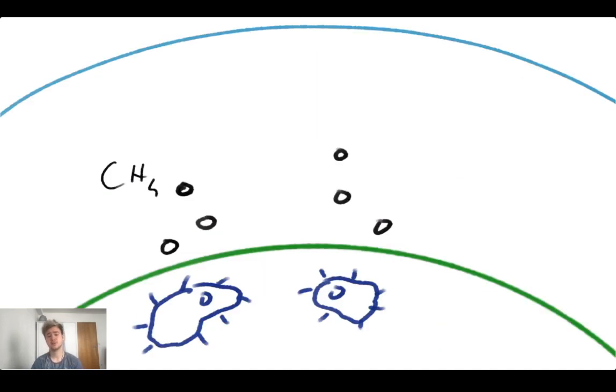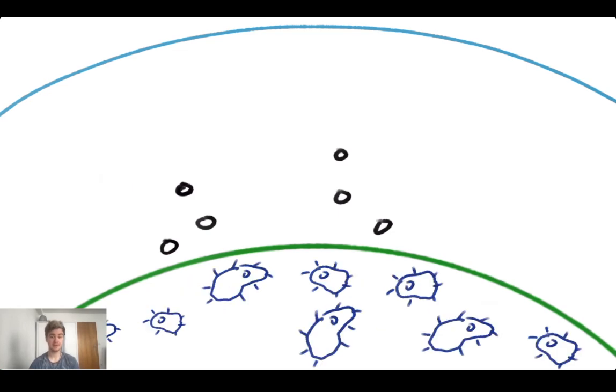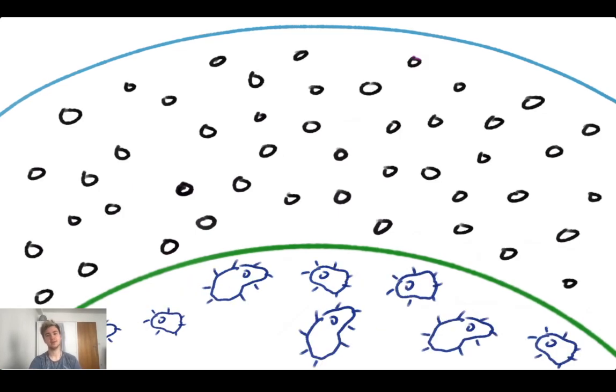And the way that that works is that you've got these methanogens on the surface of an exoplanet, and they'll metabolize, they'll grow, they reproduce, and what they do during that entire process is make methane. And if you have a few bacteria, you'll have a little bit of methane in the atmosphere. But if you have lots of bacteria, you'll also get lots and lots of methane in the atmosphere.